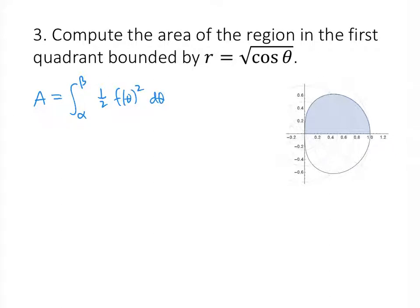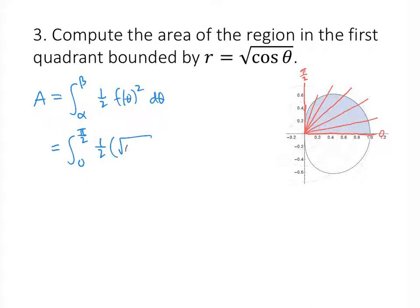Setting up the integral is often the tricky part. We want to think radially — looking at our picture, we start from the positive x-axis and rotate counterclockwise, thinking about radial lines, and keep rotating until we reach the end of our region. In this case that happens at pi over 2. Since we started at theta equals 0 and ended at theta equals pi over 2, those are the bounds on the integral, so it goes from 0 to pi over 2. My function is the square root of cosine theta, and conveniently when I square that I just get cosine.